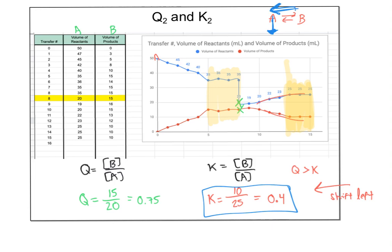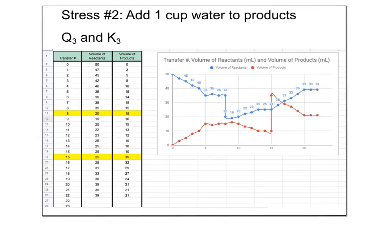The next stress: add one cup of water to the products. Right at my third equilibrium I was at about 25 reactants and 10 products. I added one cup of water to the products, so it shot up — going from 10 products to 35 products — while reactants stayed at 25. Then I continued my transfer process from there.